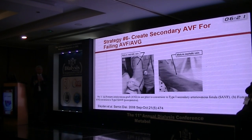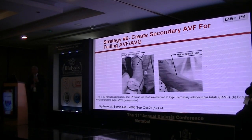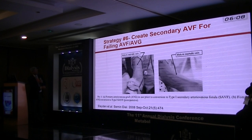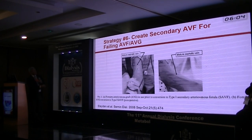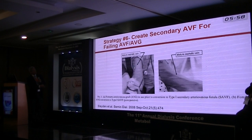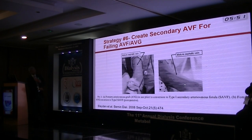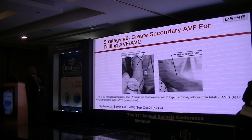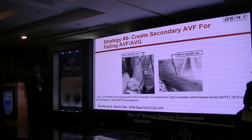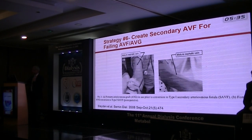Strategy six is to create a secondary fistula — secondary meaning it comes after the first fistula or first access. For example, a patient dialyzing using a graft had a beautiful vein running in the upper arm that was already matured by the increased flow from the graft. When the graft started having issues, the brachial artery was connected to that matured vein, giving instant fistula creation with a very short catheter time — maybe less than a week. So secondary fistula is a very useful strategy.